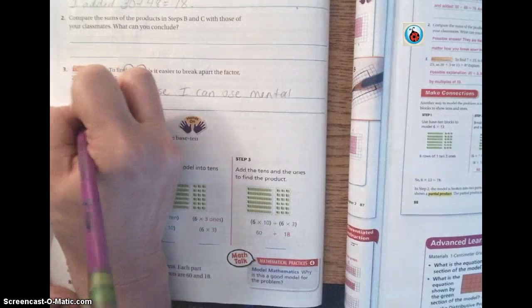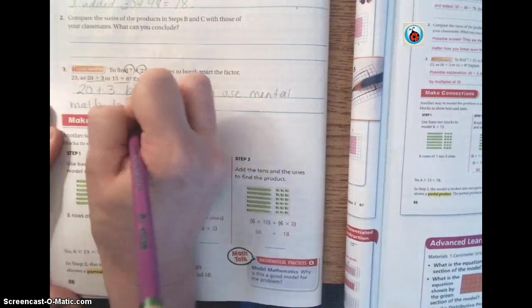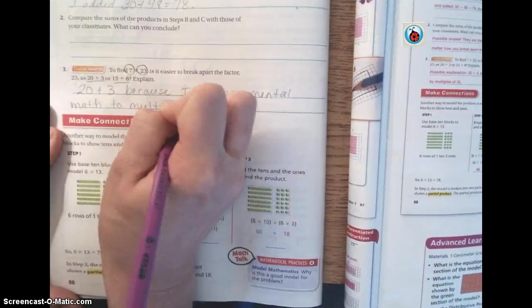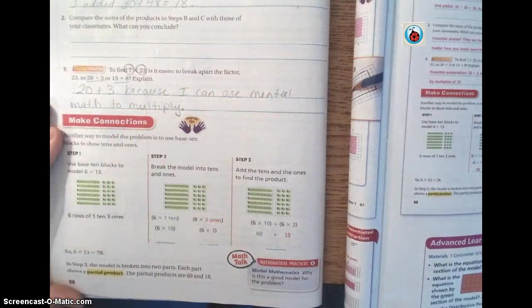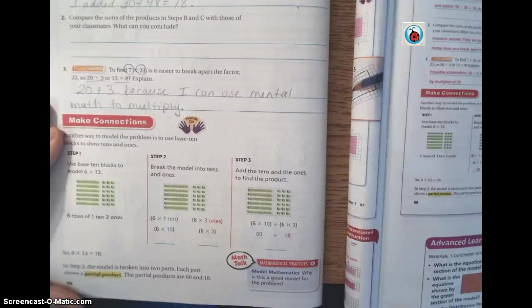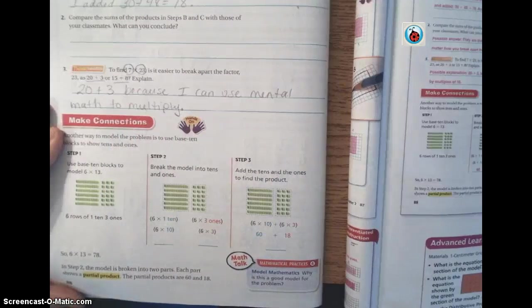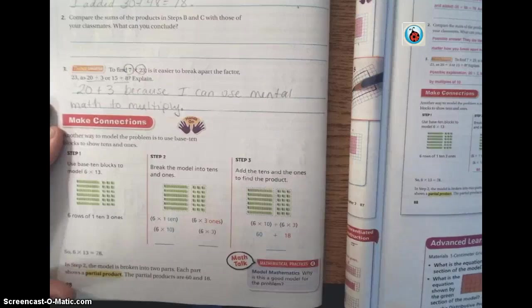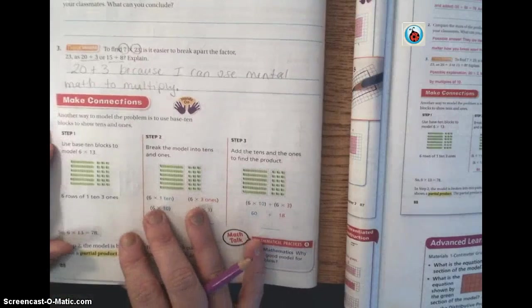So it makes more sense. So I'm just going to put 20 plus 3 because I can use mental math to multiply.